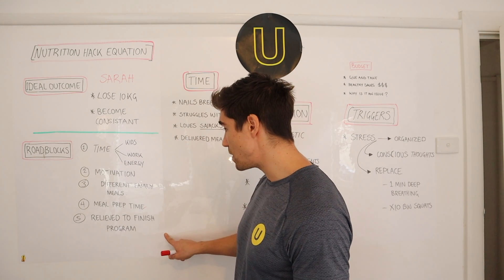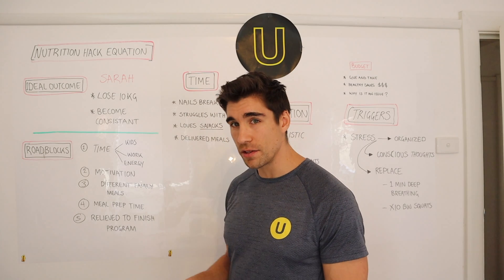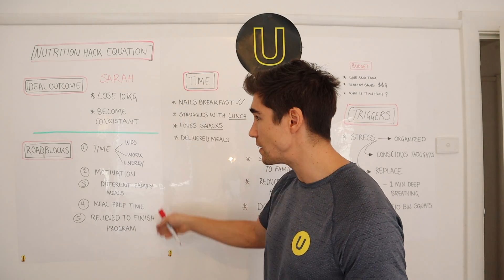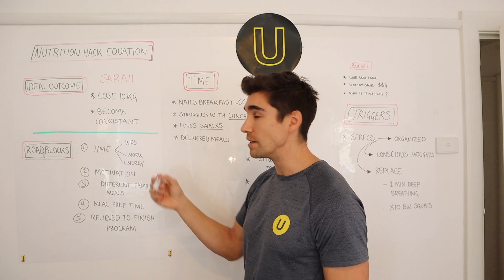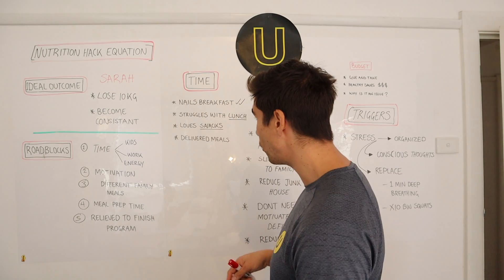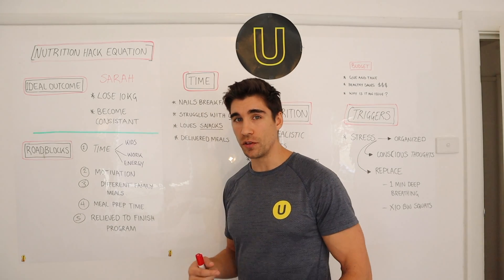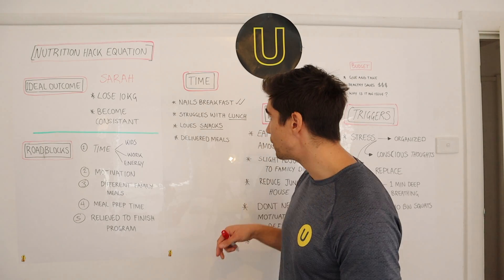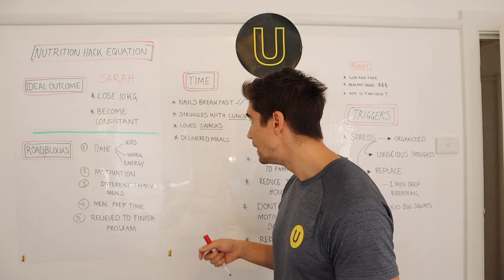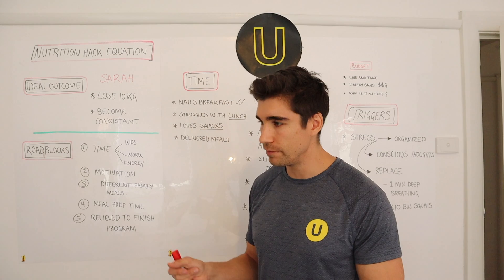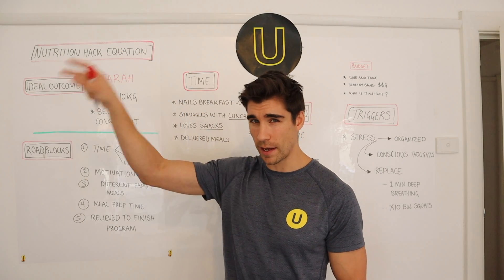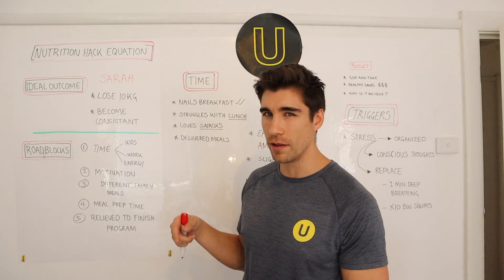So we've identified all Sarah's weak points and the areas she's struggling in. Now it's time to identify how we can start alleviating some of those stresses and reducing these friction points to make our ideal outcome more realistic. Time is a massive one for all our clients and most people out there — they're time poor. In Sarah's case, she always nails breakfast. It might be something like oats, berries, and a protein shake — easy. Breakfast is not a problem, so we leave it alone and take a measurement of what she's consuming there.